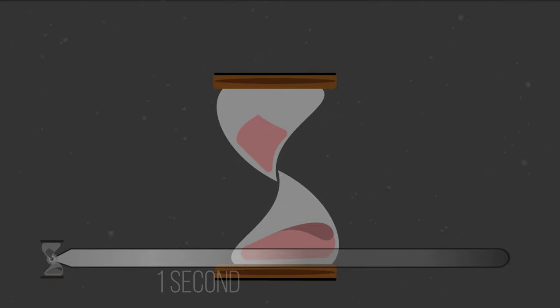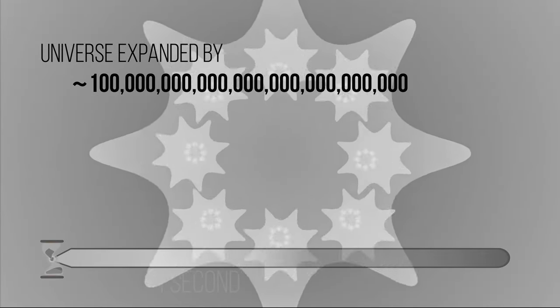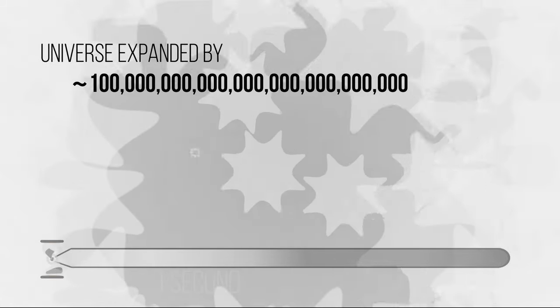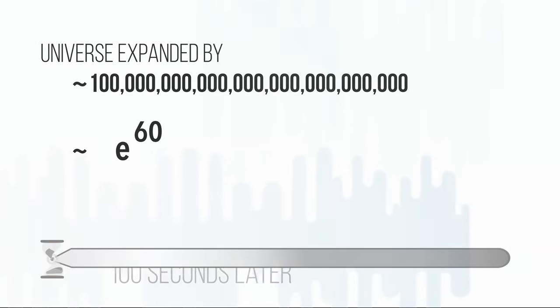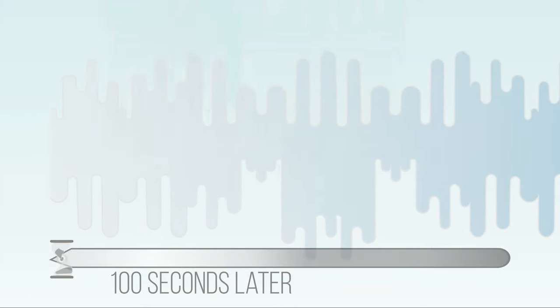Less than a second after the hot Big Bang, the universe underwent a period of massive inflation. During this period of inflation, everything grew by 60 e-foldings. After this short-lived inflation epoch,